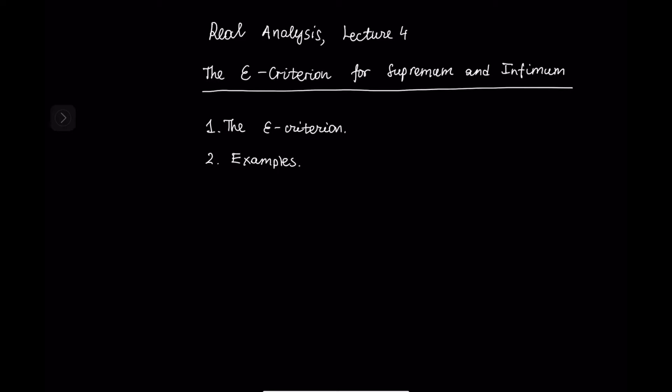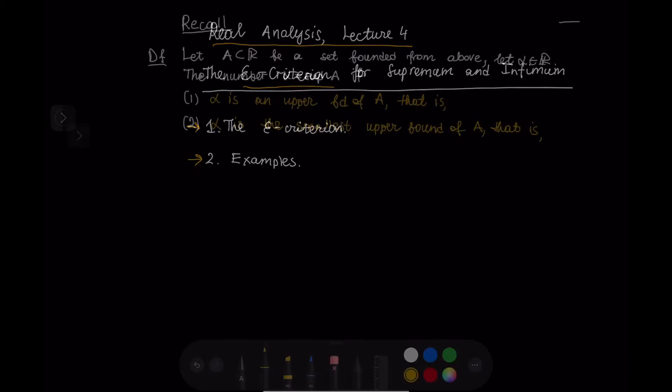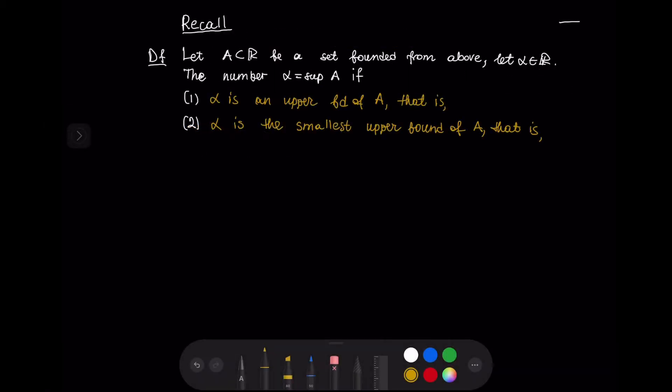Hello everyone. This is the fourth lecture in real analysis, and in this lecture we are going to discuss the epsilon criterion for supremum and infimum. We are going to state the epsilon criterion — there are actually two parts to it: one criterion for supremum and another for infimum. We will also discuss some examples. Before we proceed further, let us recall something from the previous lecture.